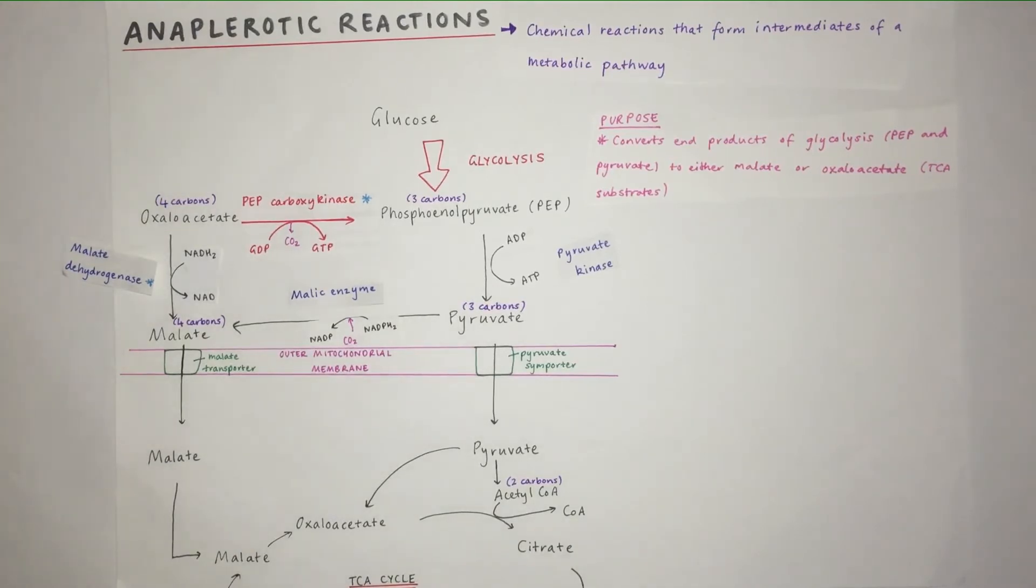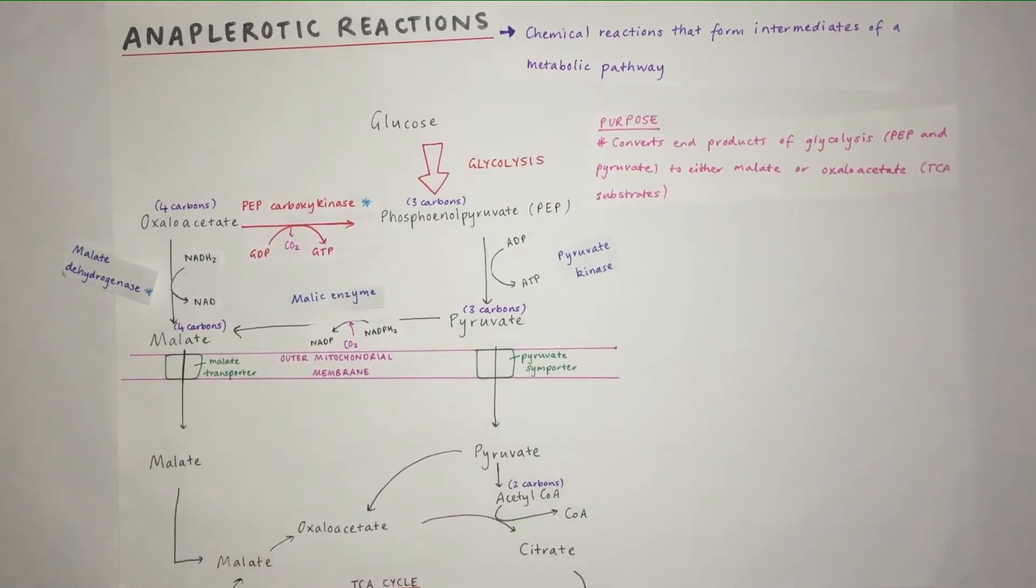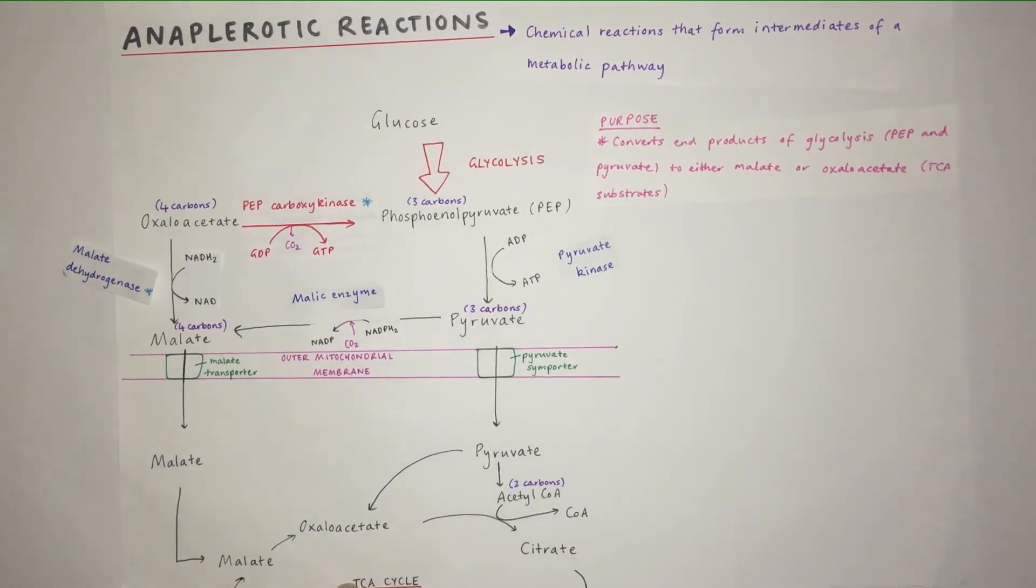Now we've got to move these compounds into the mitochondria. Pyruvate can enter the mitochondria through the pyruvate symporter, and malate can enter the mitochondria through the malate transporter, both located on the outer mitochondrial membrane. Since malate is an intermediate of the TCA cycle, it can go straight into the TCA cycle.